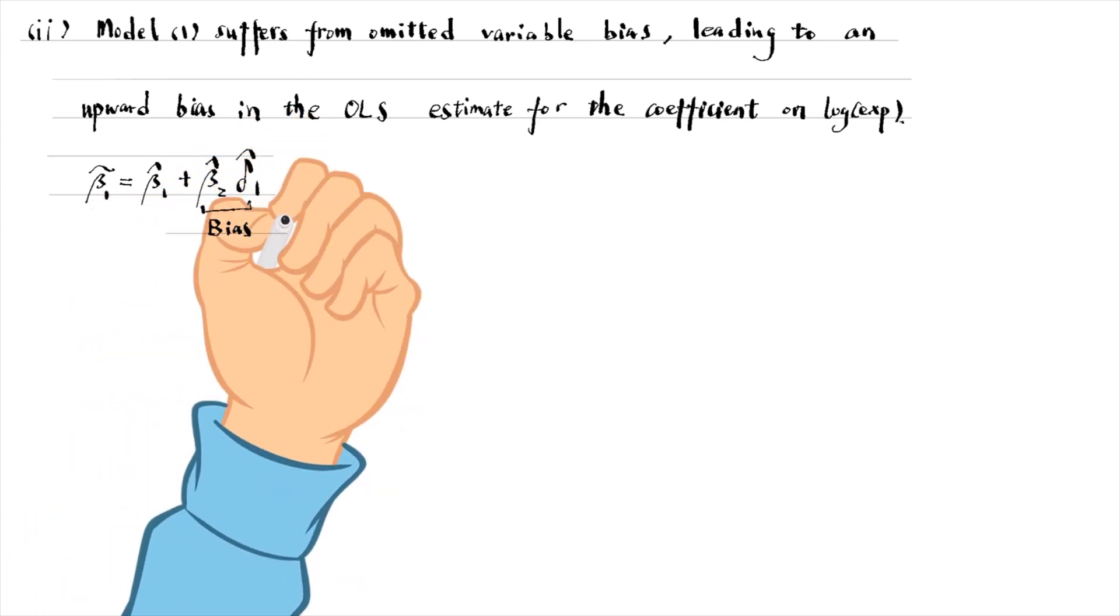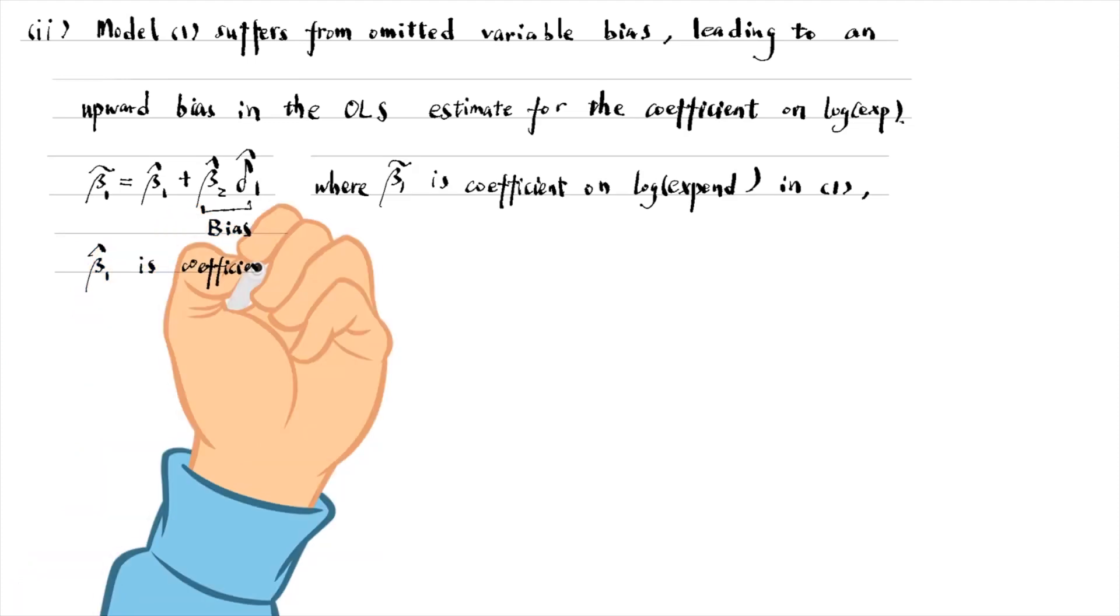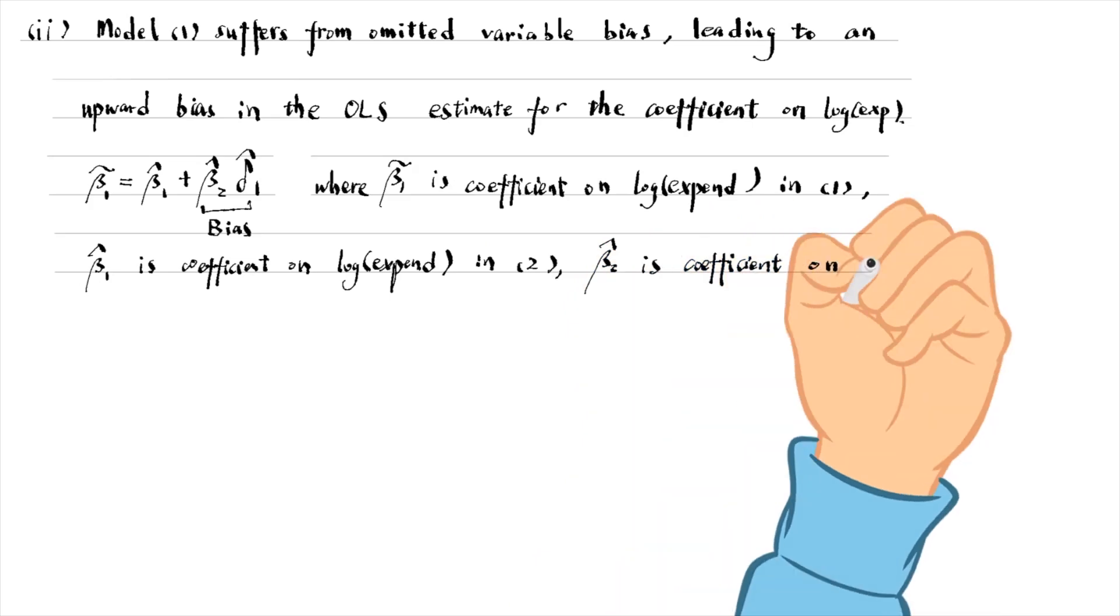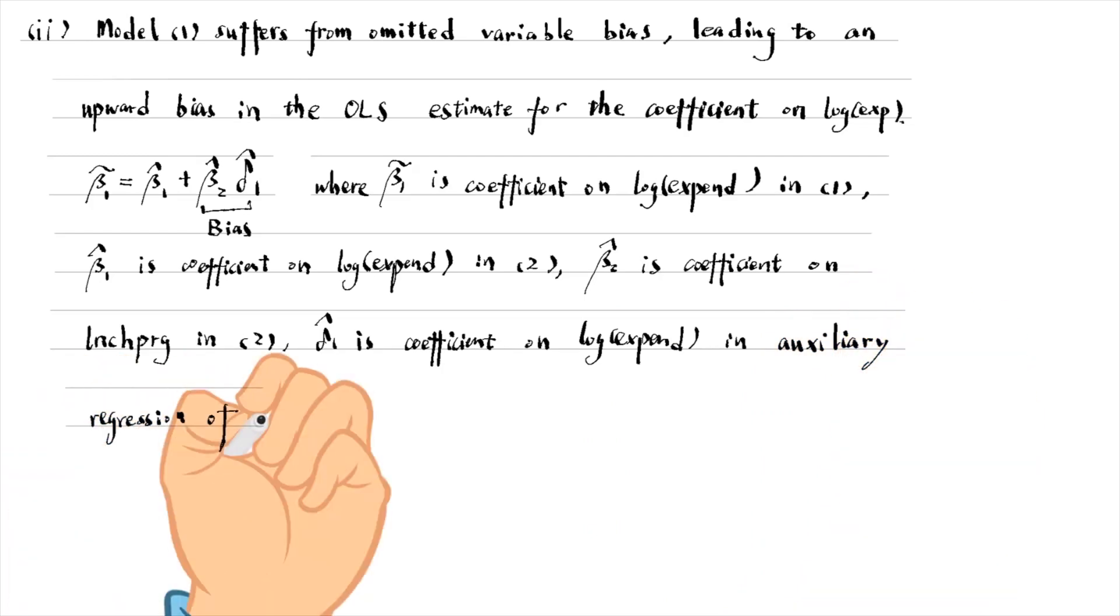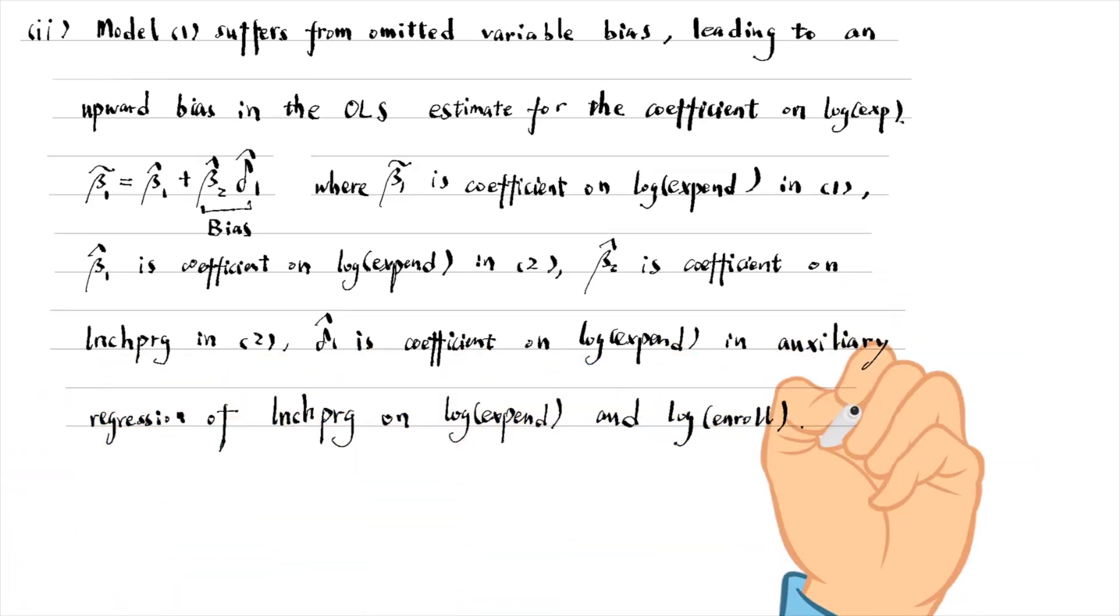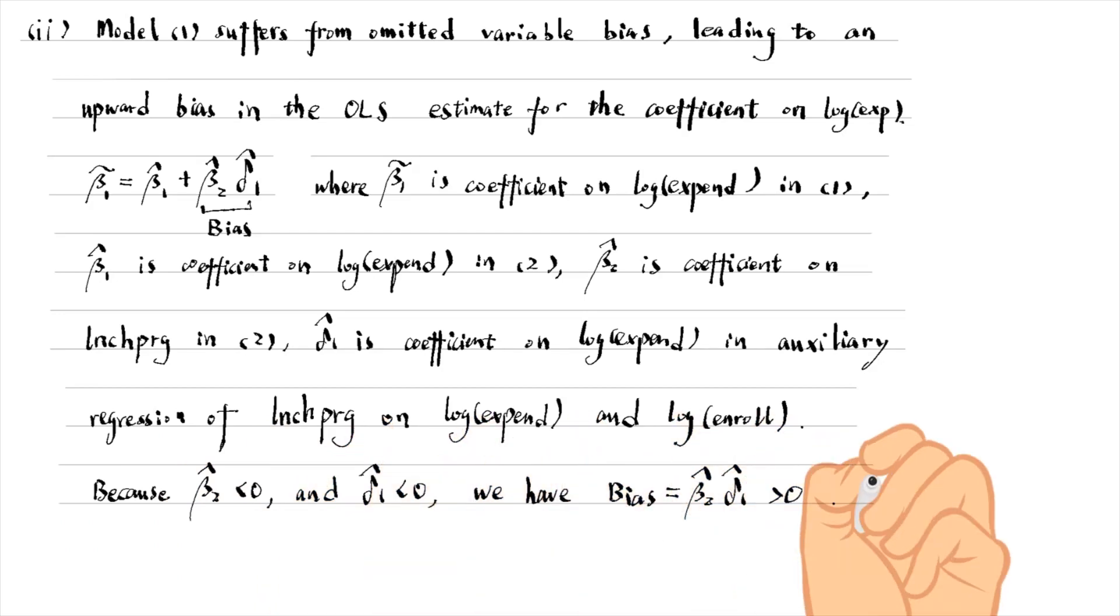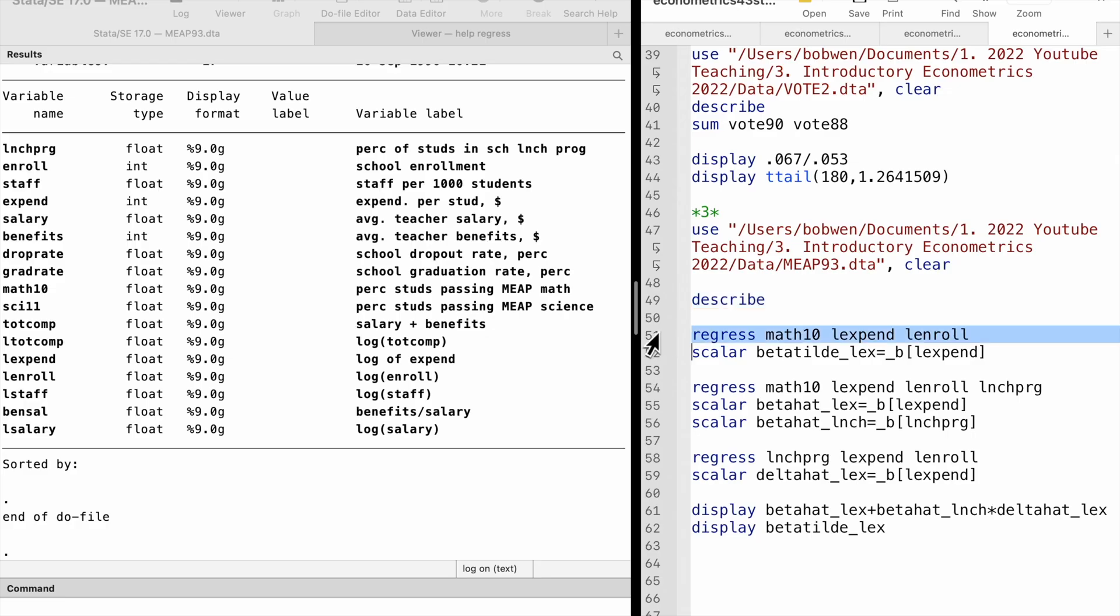For part 2, delta 1 is the coefficient on log expenditure in model 1. Because beta 2 hat and delta 1 hat are negative, the bias is positive. Therefore, the coefficient on log expenditure in model 1 is higher than that in model 2. We can verify this relationship in Stata.